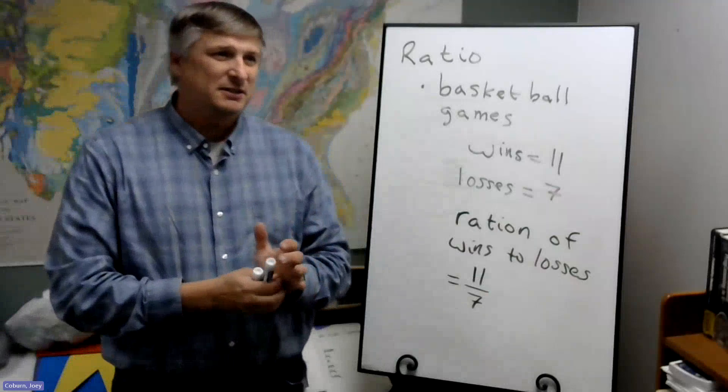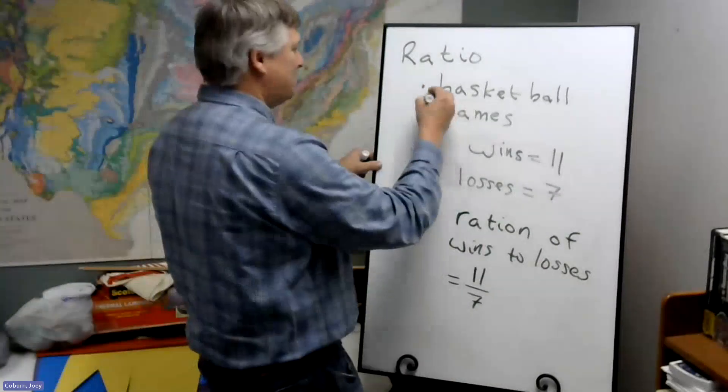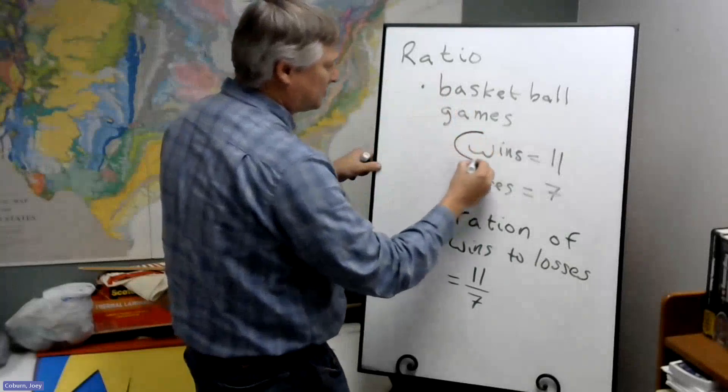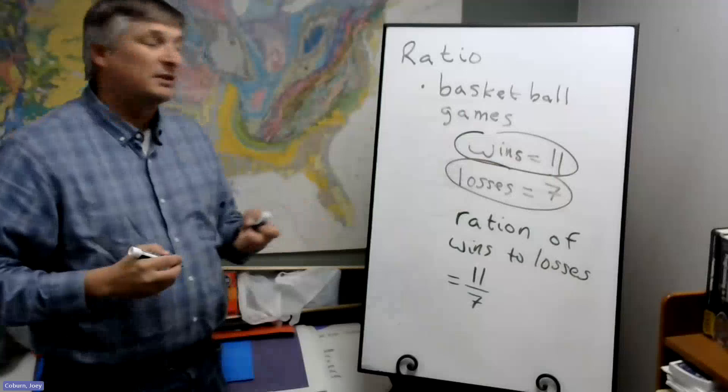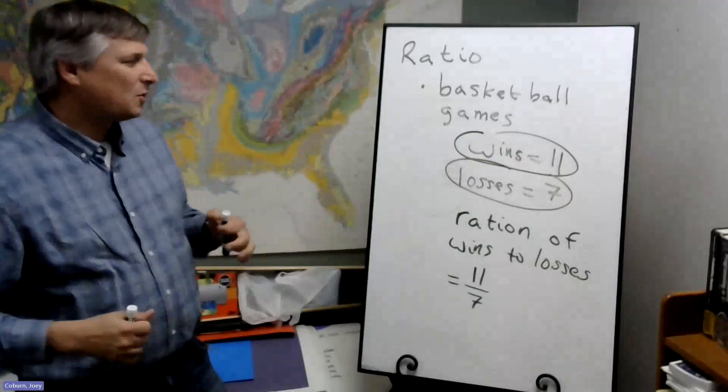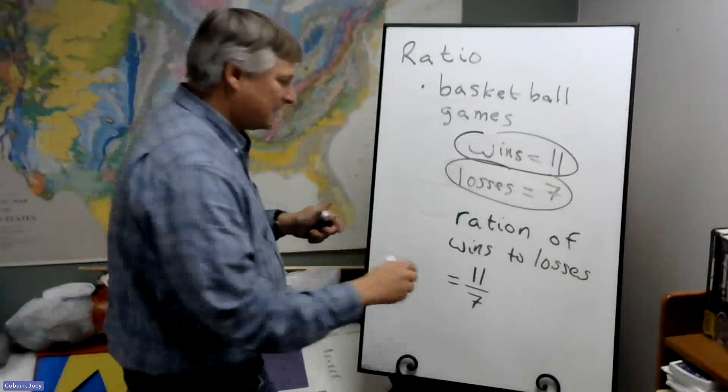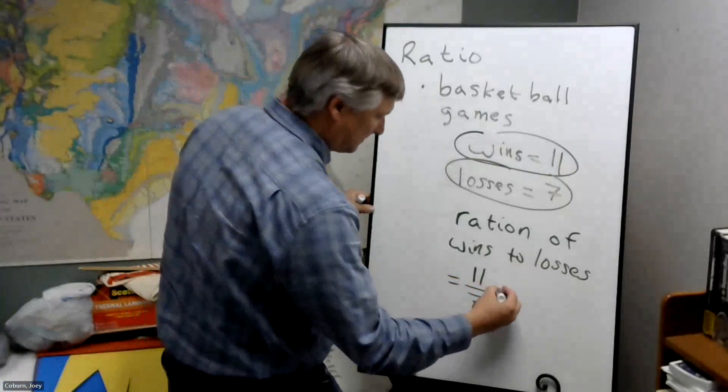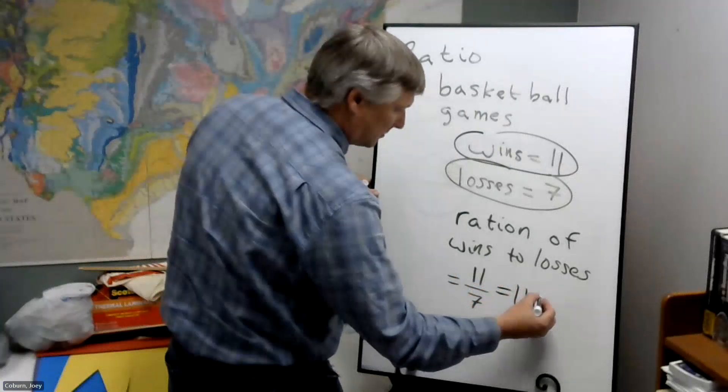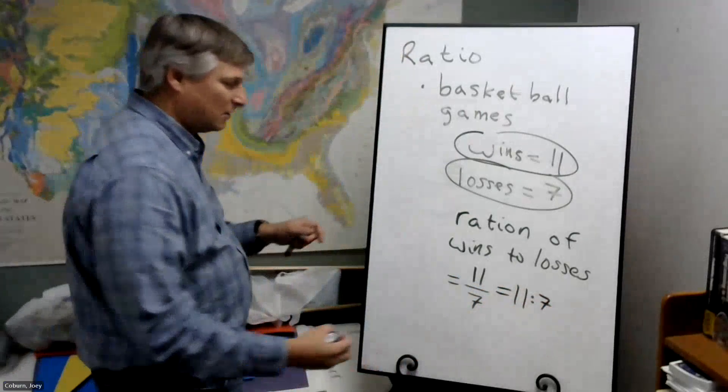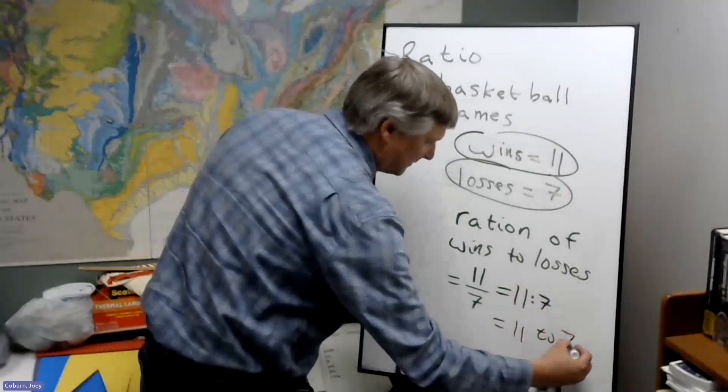So what a ratio does, it takes the same quantity, basketball games, this is the main quantity, and we have these two subgroups of basketball games, wins and losses. And so we compare those. So we could write this as 11 over 7, or you'll see it written as 11 colon 7, or it'll be written as 11 to 7.